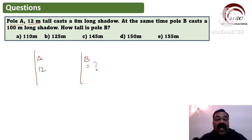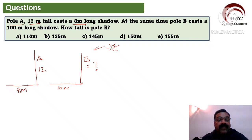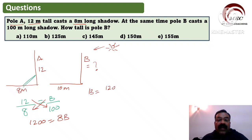The condition is: pole A is 12 meters long and its shadow is 8 meters. When sunlight comes from one side, the shadow falls on the other side — so this is the 8-meter shadow and that is the 100-meter shadow. We want to find the length of pole B. The ratio here is: a 12-meter pole casts an 8-meter shadow; similarly, pole B casts a 100-meter shadow. Using this ratio we have to find B, so we cross multiply: 12 × 100 = 1200 = 8 × B.